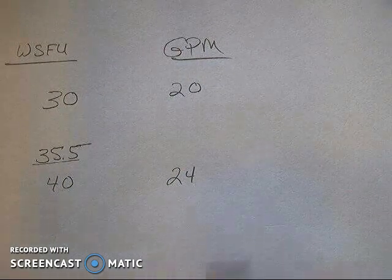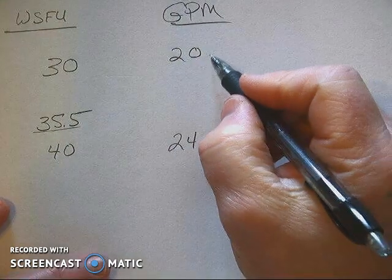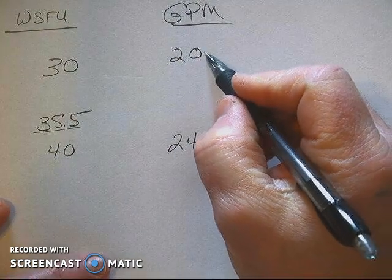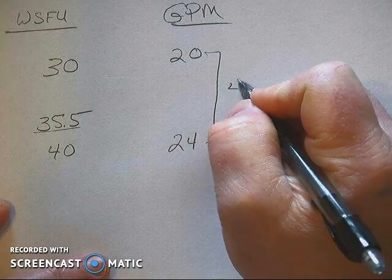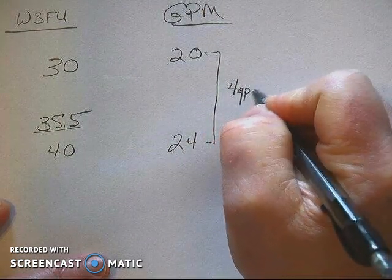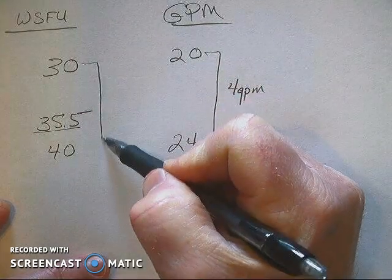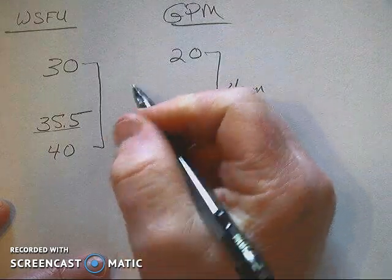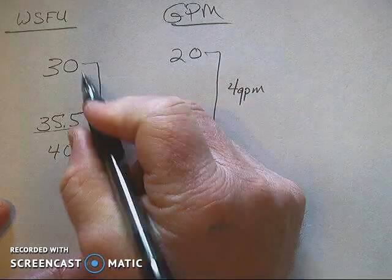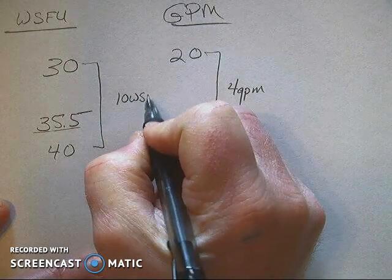Now to start this off, we are going to take a look at the difference in gallons per minute on this side which is 4 GPM, and then we're going to take a look at the difference in WSFU on this side between the two numbers that I do have which is 30 and 40, and the difference between that is 10 WSFU.